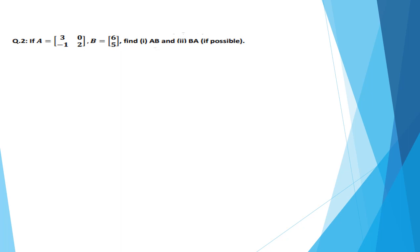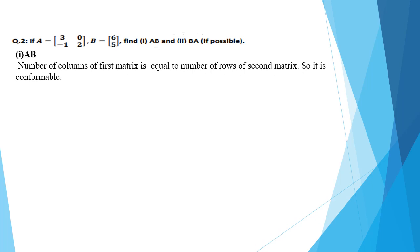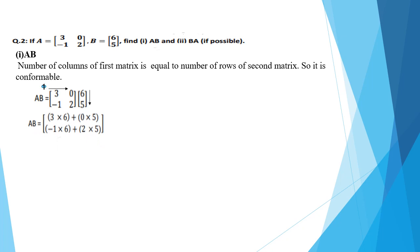If A and B are two matrices, we have to find AB and BA if possible. First part is AB. For AB, we check the order of matrix A and B. Matrix A has two rows and two columns while matrix B has one column and two rows. The number of columns of the first matrix equals the number of rows of the second matrix, so it is conformable for multiplication. For multiplication, first we multiply the first row with the first column, then the first row with the second column.